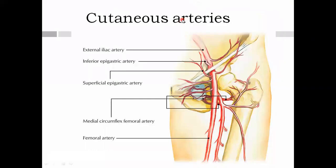Now the cutaneous arteries — we have three. One is the superficial epigastric, another is the superficial circumflex iliac, and the third is the superficial external pudendal. All three are branches of the femoral artery and arise below the inguinal ligament. These are each accompanied by their own tributaries.